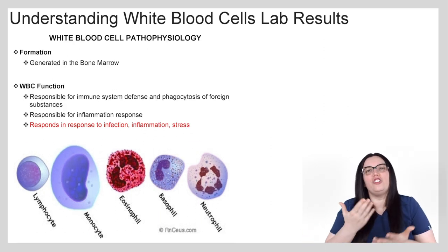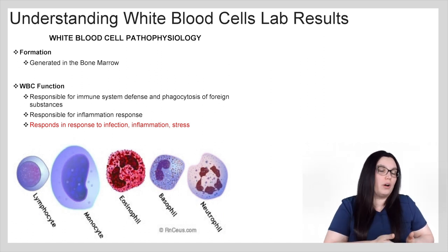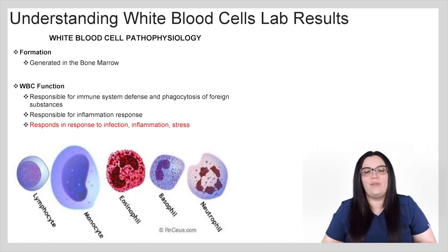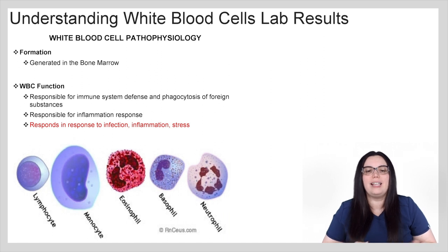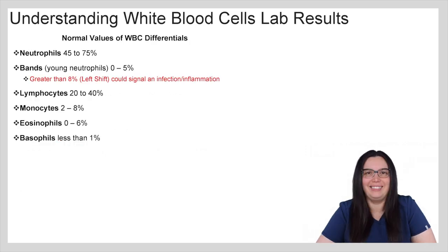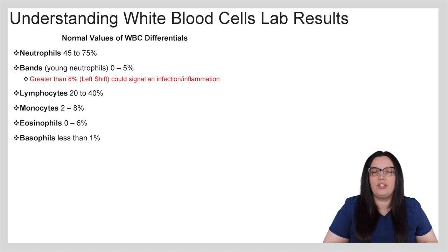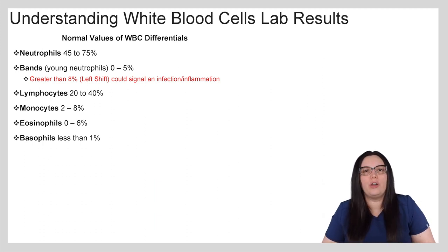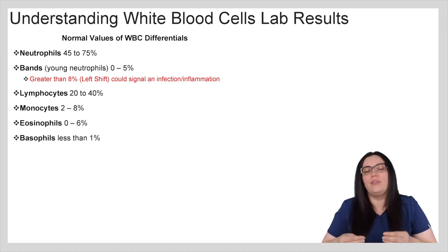What is the pathophysiology of our white blood cells? They are formed in the bone marrow, and the primary function of white blood cells is they are responsible for immune system defense and phagocytosis of foreign substances. They're really responsible for the inflammation response and they respond to infections, inflammation, and stress indicators found throughout our body. Normal white blood cell counts are between 4,000 and 10,000, but many white blood cell labs are going to come back with white blood cell differentials, so it's important to know specifically what the normal values are for each type of white blood cell in your differential.